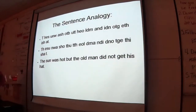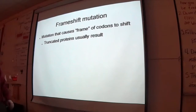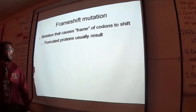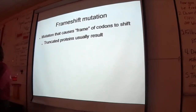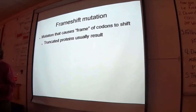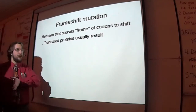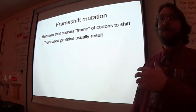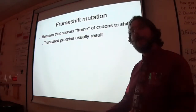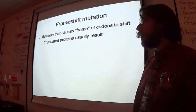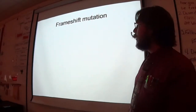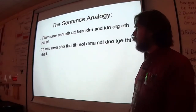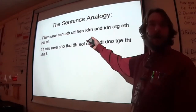That mutation right there is called a frame-shift mutation — it shifted the reading frame. We talked about how you find the start codon, which sets your reading frame. Those two examples are both frame-shift mutations. You can see how things got weird.